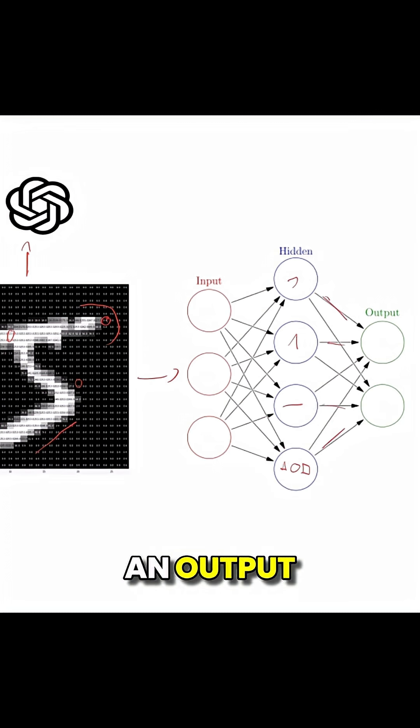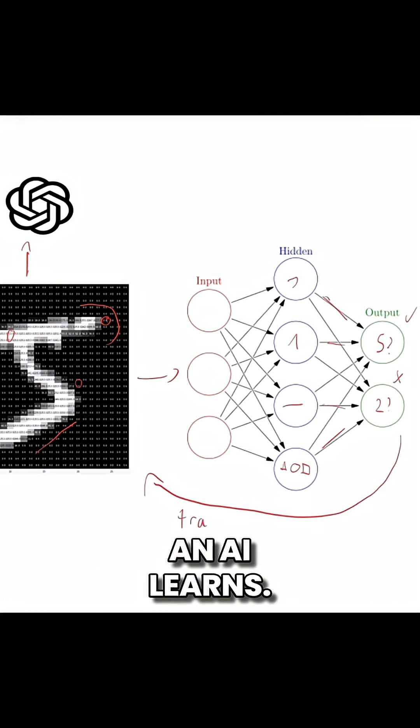Finally, the last layer gives an output, like this looks like a five, but it's not perfect. During training, the network checks how close it was to the right answer and tweaks its math. That's how an AI learns.